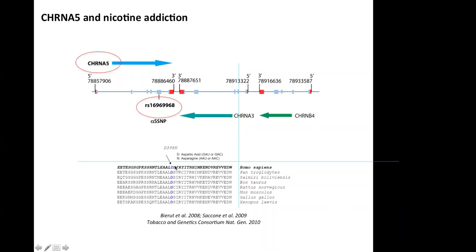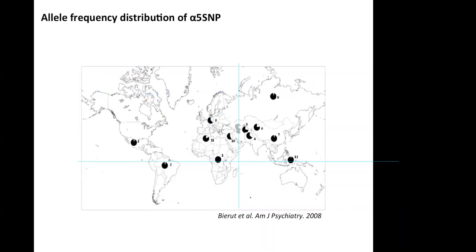The aspartic acid residue is very well conserved among species from humans to non-human primates, birds, rodents, and even amphibia, implying its functional importance. Concerning the frequency of this SNP, it is present in 37 to 43 percent of European and Middle Eastern populations, but it is not common in Asians, Africans, or Native Americans.